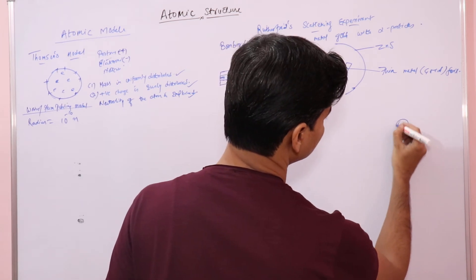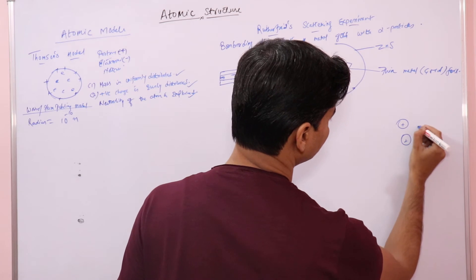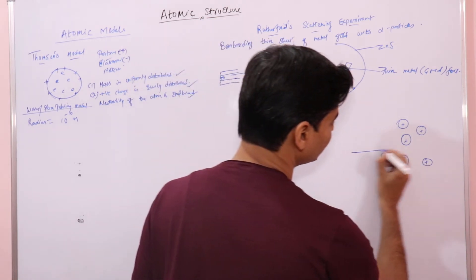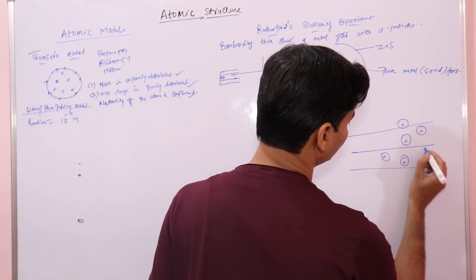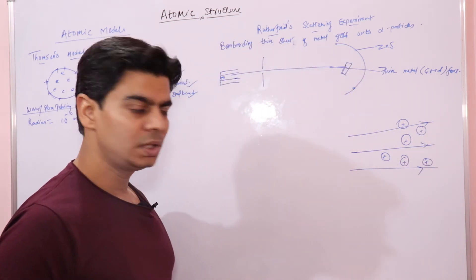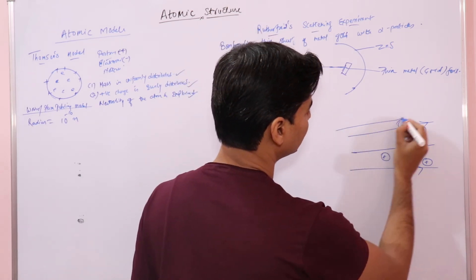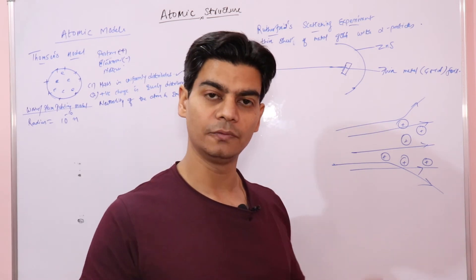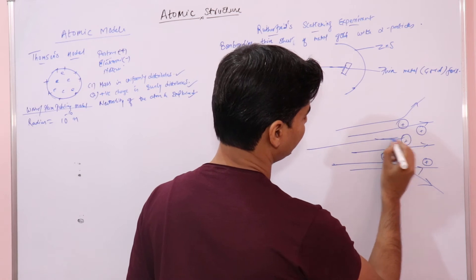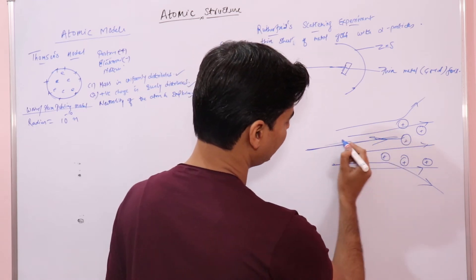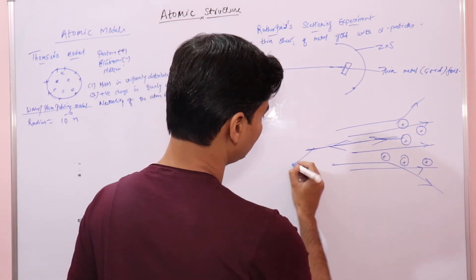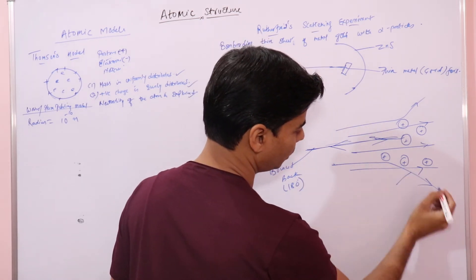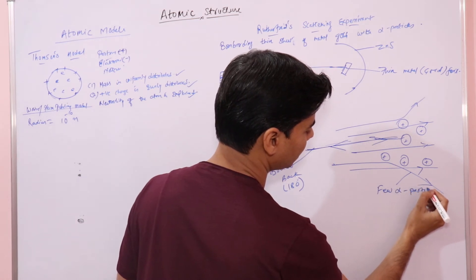If we try to draw these observations: the atoms of gold in the thin sheet are represented as positive bodies. Most of the alpha particles went straight through. Only some of the alpha particles were deflected by small angles. And very few - one in about 20,000 - were bounced back completely, deflected by 180 degrees, returning in the same direction they came.